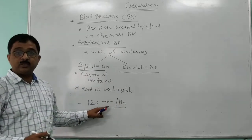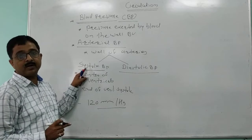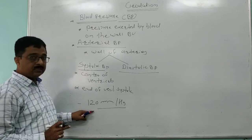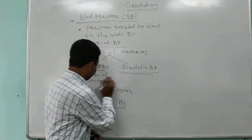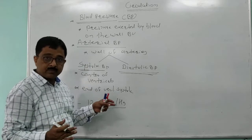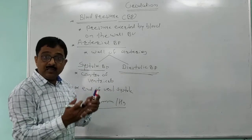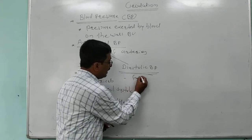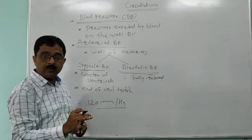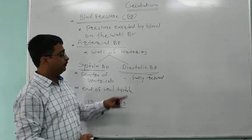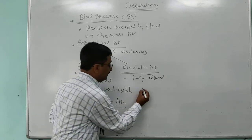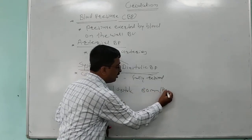Millimetres of mercury is the unit used for measuring blood pressure. So in a normal adult human being, systolic blood pressure is 120 millimetres of mercury. Diastolic phase means the relaxation of the chambers. When the ventricles are fully relaxed, the pressure exerted by the blood on the wall of the arteries is minimum — that is called diastolic blood pressure — and in a normal adult human being it is 80 millimetres of mercury.